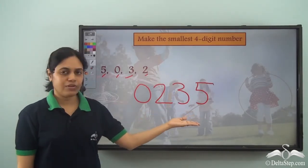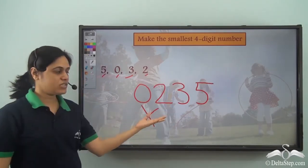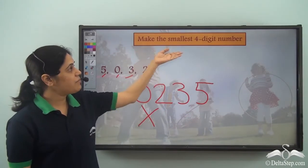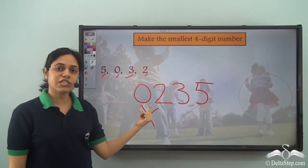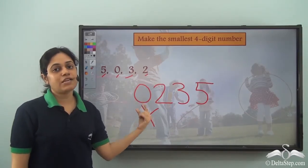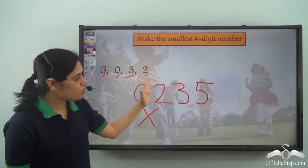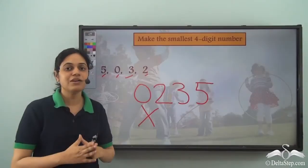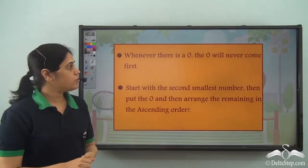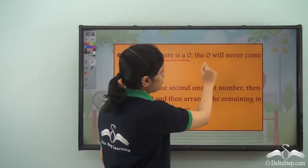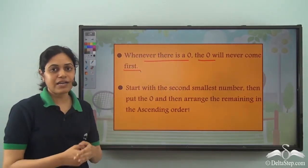If we write 0 first we get 0235, which is only a three-digit number, not a four-digit number. So we cannot have 0 as the first digit, because as soon as we put 0 as the thousands digit, this no longer remains a four-digit number — it becomes a three-digit number. So 0 will never come as the first digit.